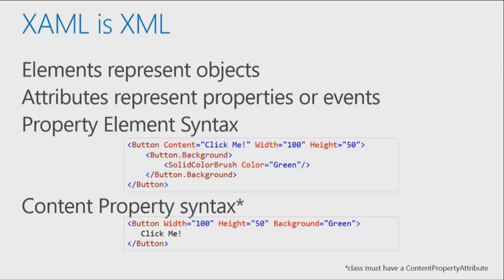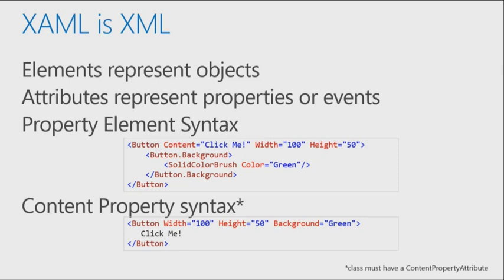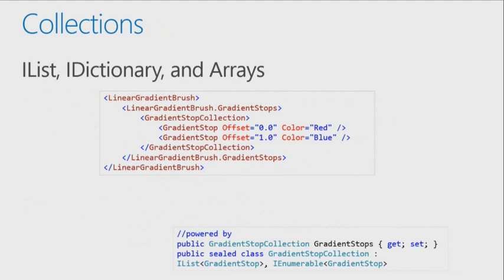We also have content property syntax — Microsoft declares their XAML controls with a default property, which is the content property. For example, a button with width equals 100, height, and 'click me' as content inside the button — you can declare it that way. The tools will usually try to use the actual attributes, but if you want to use XML inside the element, that's fine with content property syntax. It just has to be a control that has that content property attribute set. Importantly, you can put pretty much anything inside a button or any content control — the content property is object, so you can put images or even a grid and build a whole UI inside your button and make it clickable.